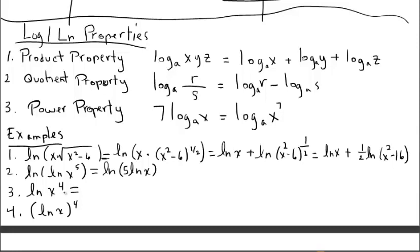For number three, we can use the power property and pull the 4 in front as a coefficient. Compare number three and number four: in number four, the exponent 4 is on the entire natural log function itself, not just on the argument. So we cannot apply the power property to number four — the 4 is on the entire function, not an exponent within the argument.